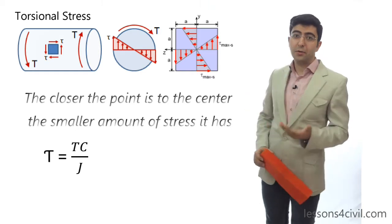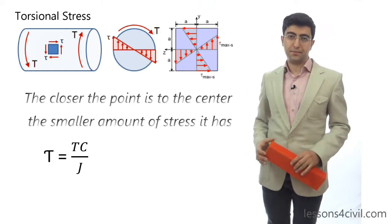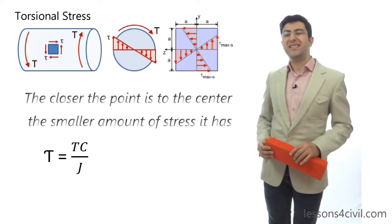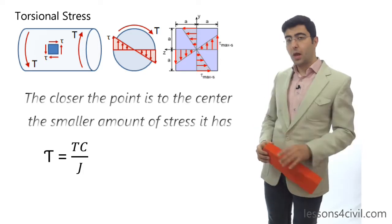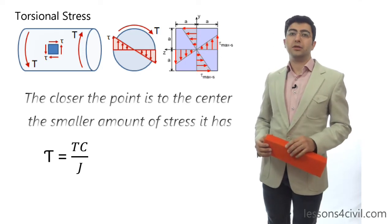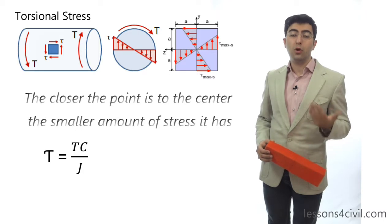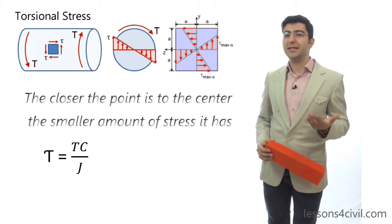Here is the formula to calculate the amount of torsional stress. Torsional stress denoted tau is equal to TC over J. In this equation, T is the amount of internal torque. And for those of you who are not familiar with the word torque, I should say it is exactly like moment.